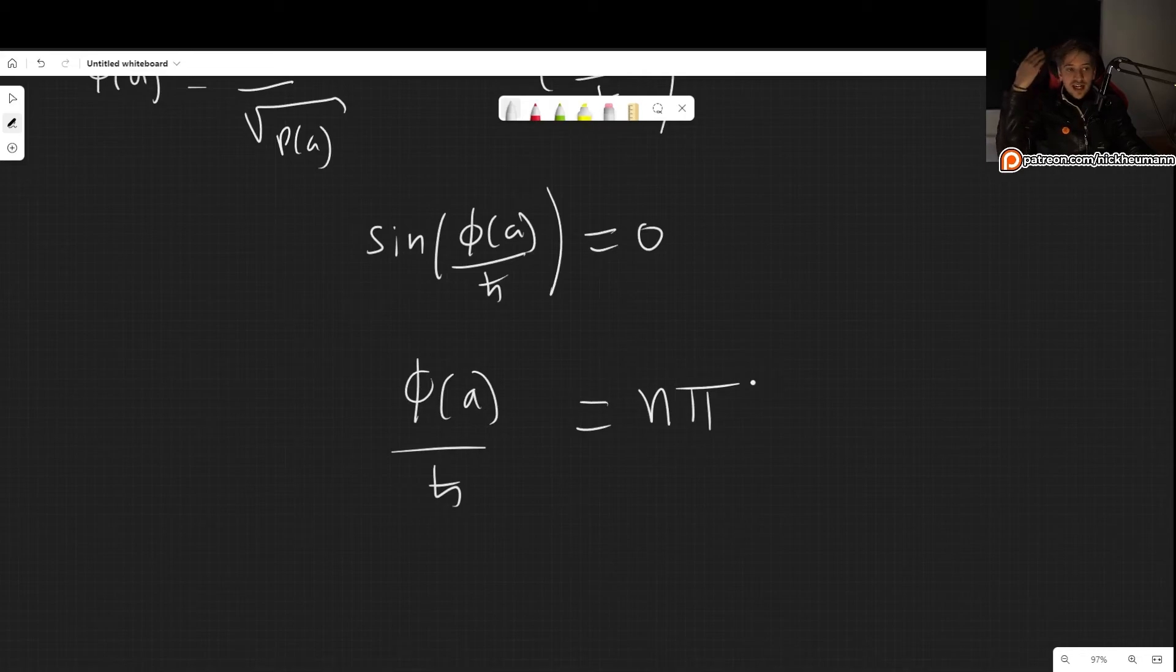Because sine is zero at pi, two pi, three pi, four pi, and so on. So with n going from zero, one, two, three, etc.